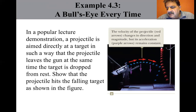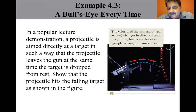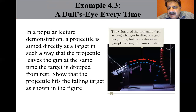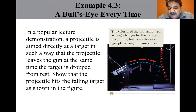The velocity of the projectile — the red arrows — changes in direction and magnitude, but the acceleration — the purple arrows — remains constant. Conceptualize: the problem does not ask for numerical values; the expected result must involve an algebraic argument. We categorize this as one involving two objects in free fall — the target moving in one dimension and the projectile moving in two dimensions. The target T is a particle under constant acceleration in one dimension; the projectile P is a particle under constant acceleration in Y and constant velocity in X.